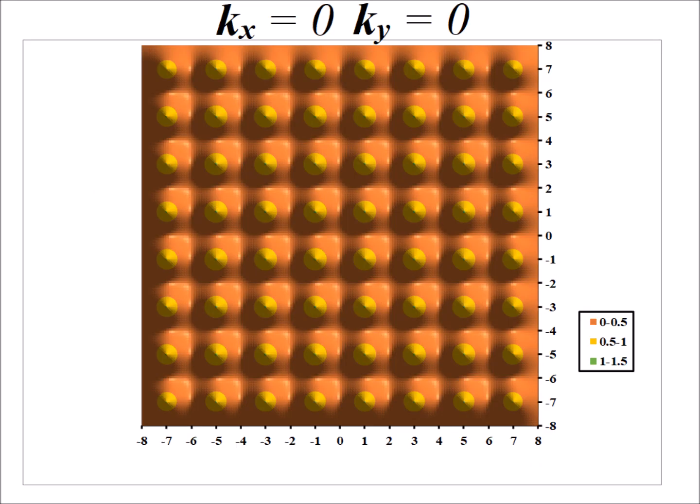We can represent the electronic state of the lattice in terms of the quantity k, which is the so-called wave vector. The components of the wave vector are kx in the x direction and ky in the y direction. Rather than computing k for each of these values, it will be more convenient to show you the x and y components of k directly. Our simplest example is when kx and ky are equal to zero.